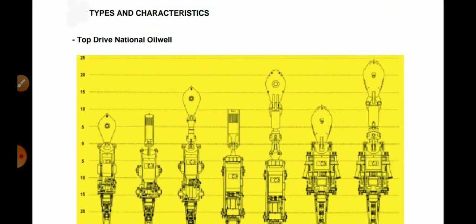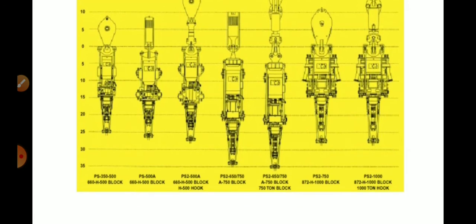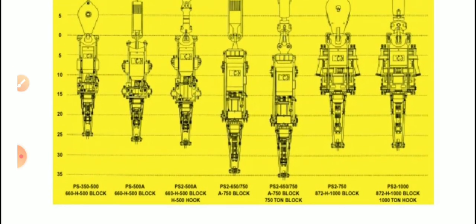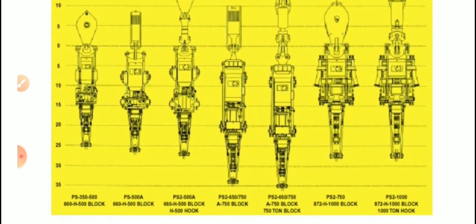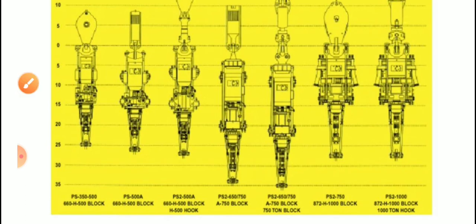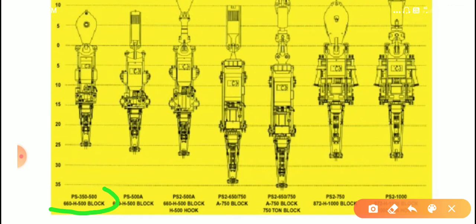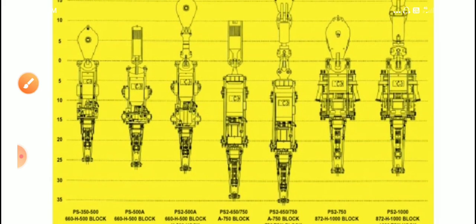There are many types of top drive systems available from NOV. Some of the types include PS 350, 500, 660, H 500 block, and similarly many other different types of top drive systems.